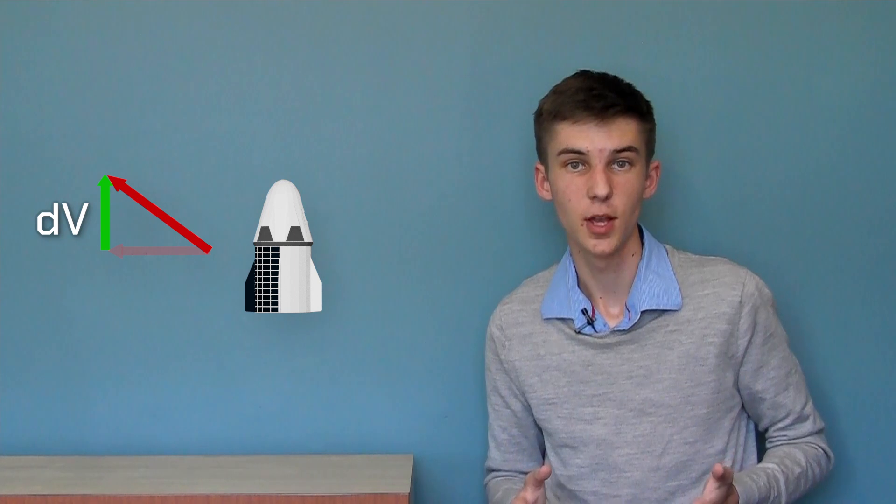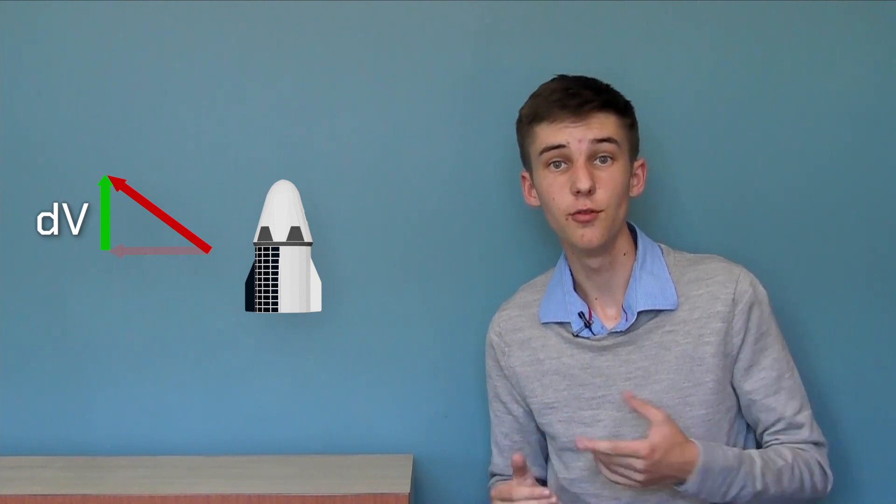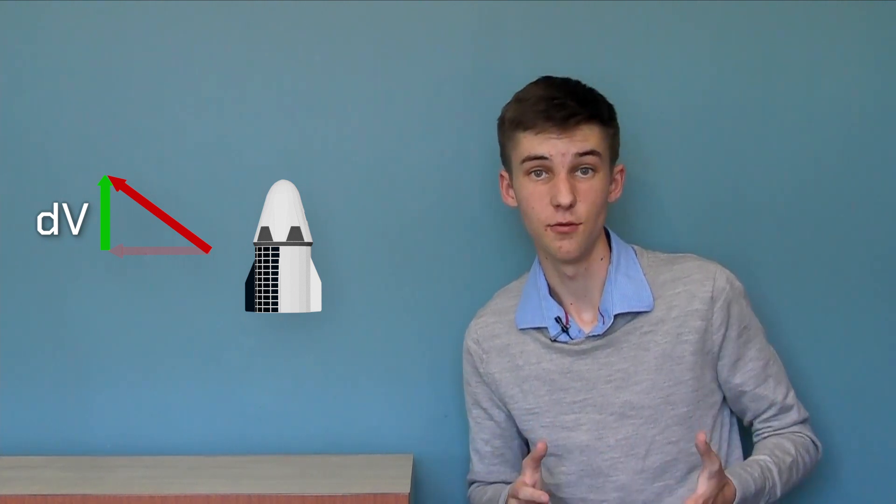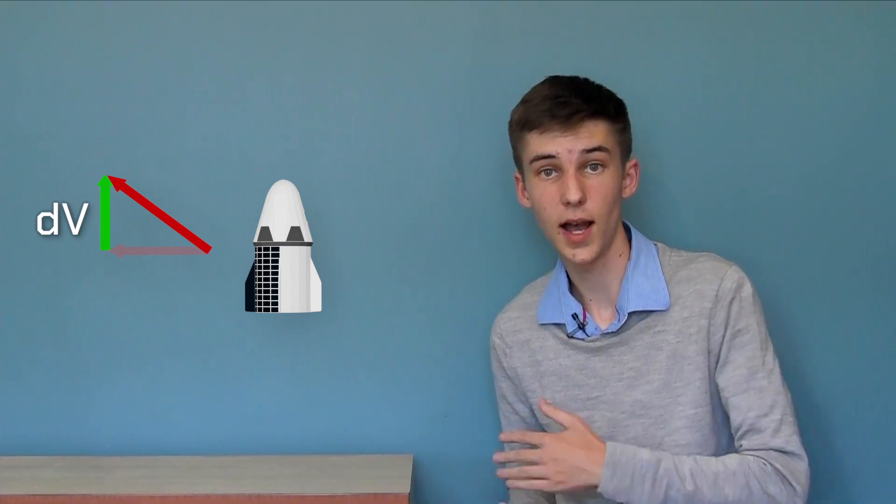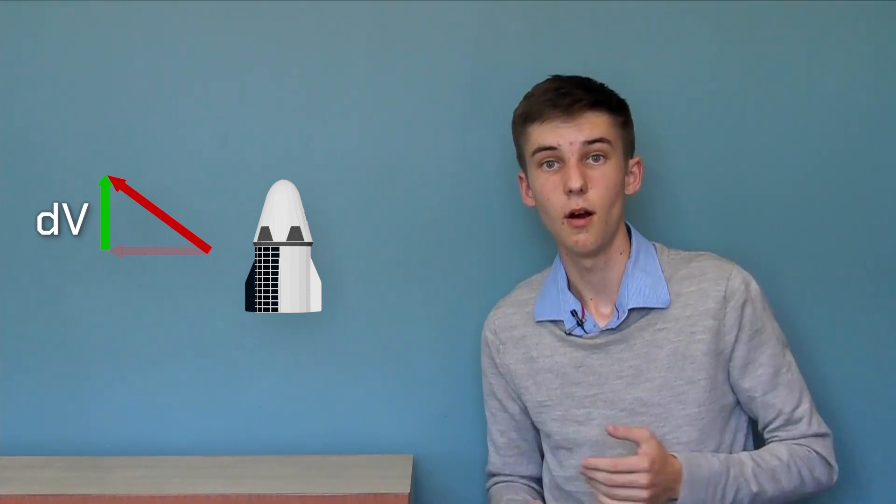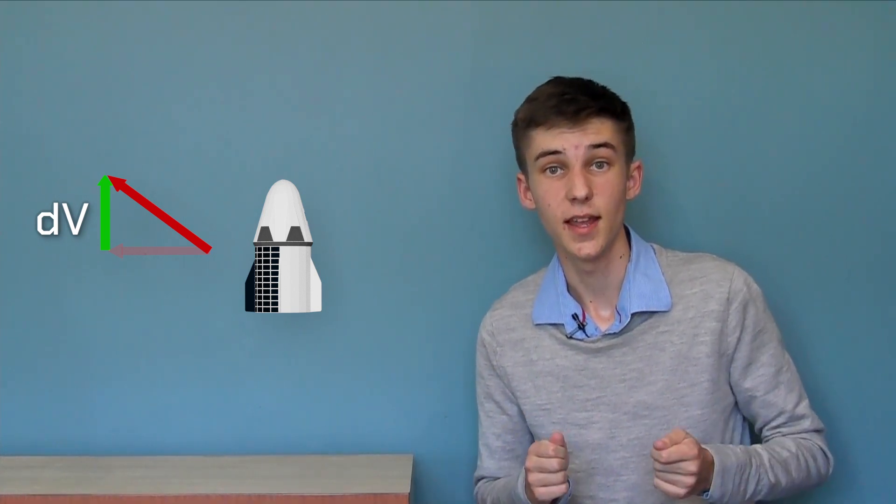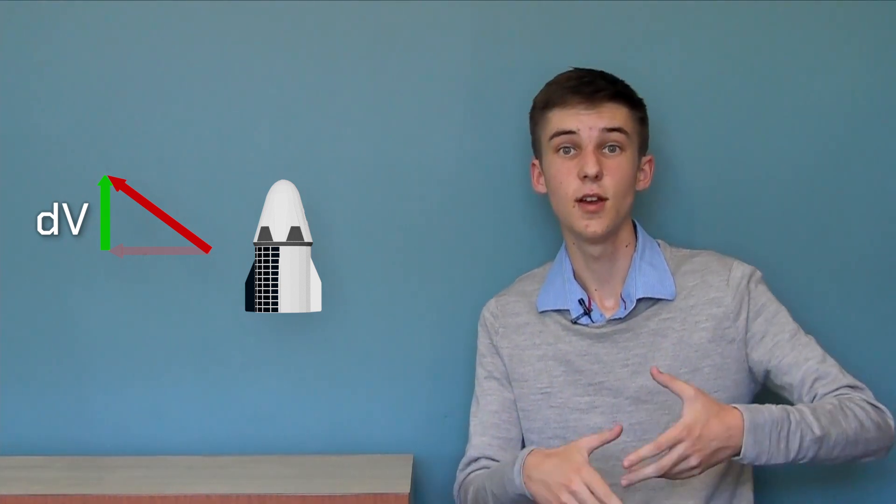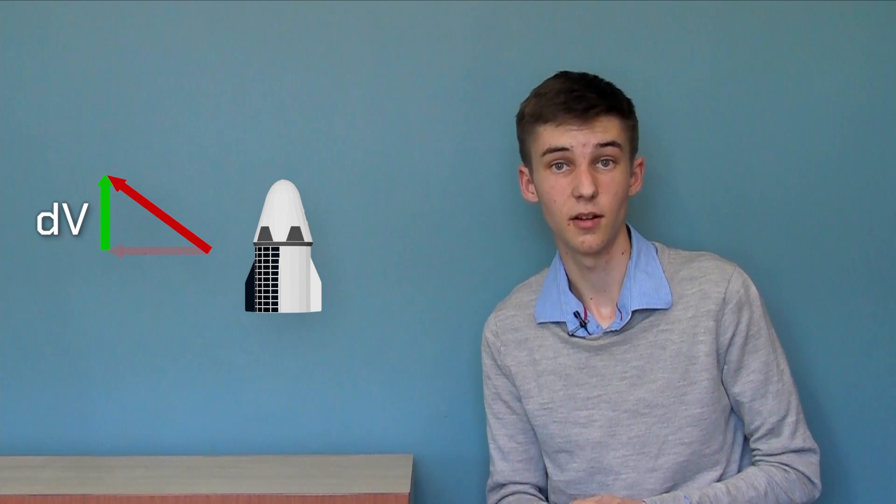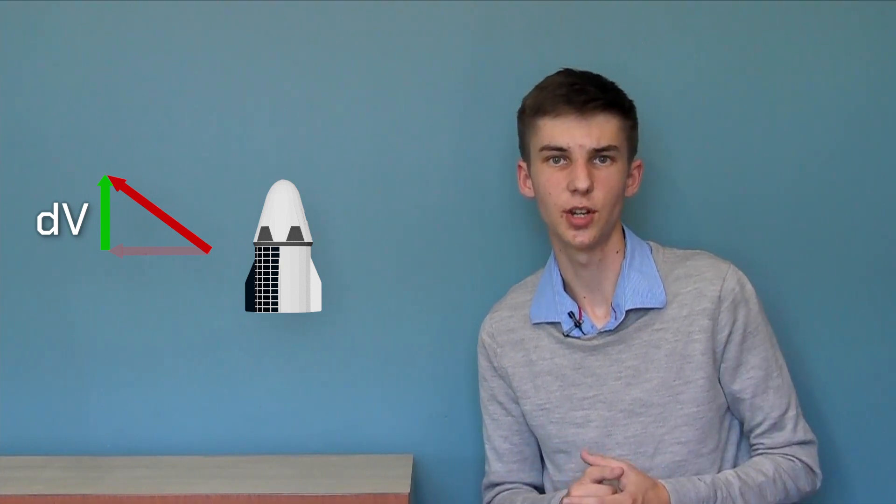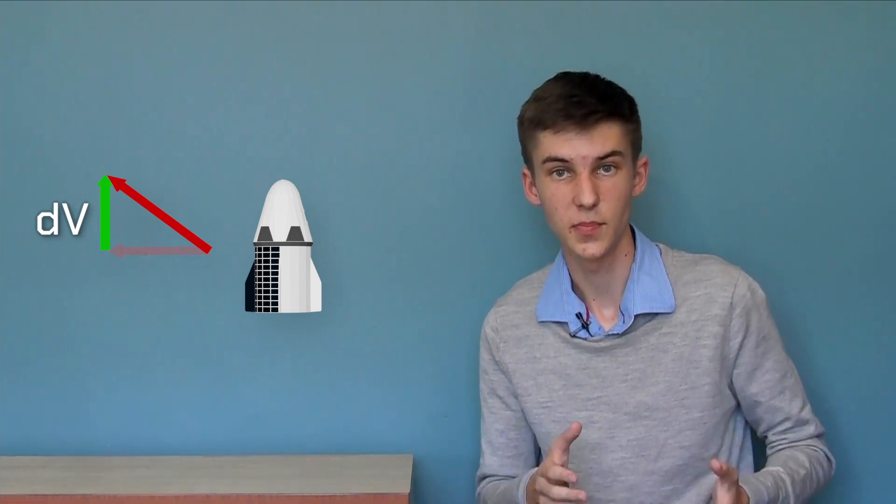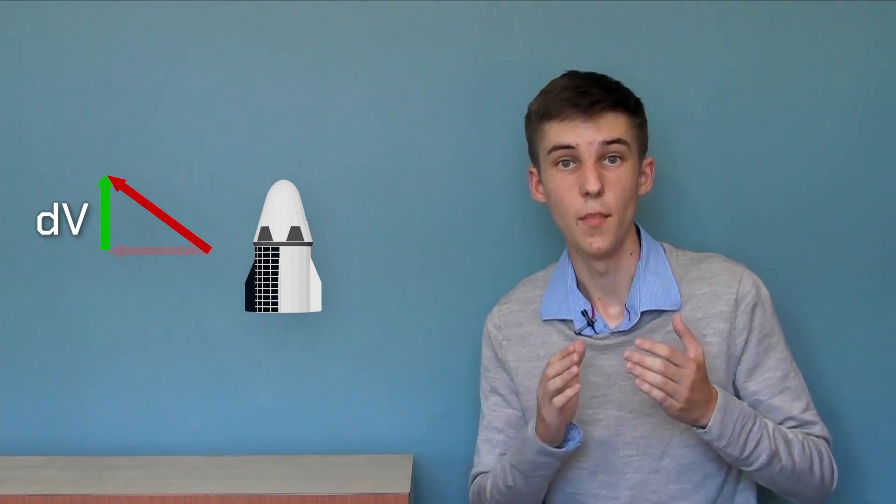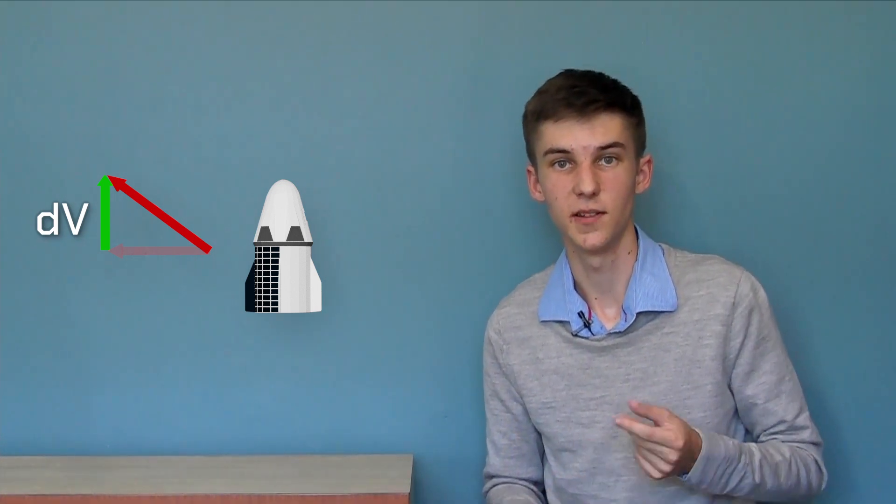If you're planning a mission, you would figure out all the maneuvers that you're going to have to do, and then you would total up the delta V that you need. You would go to your engineers and say, this spacecraft has to have, say, 1000 meters per second of delta V to complete this mission. Then they can build the spacecraft to be able to maneuver with that much delta V.